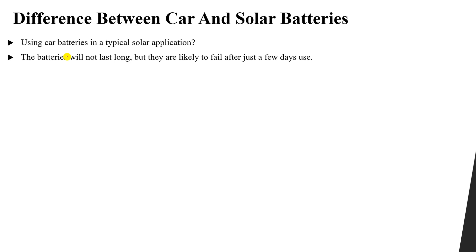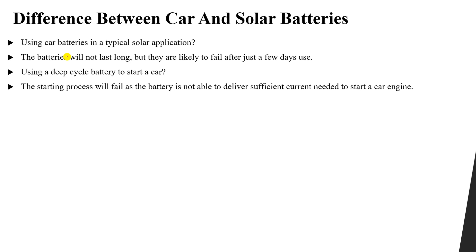Can we use a deep cycle battery to start a car? The answer is also no. The starting process requires a large amount of energy in a very short time to start the car. Solar batteries provide sufficient power for a long duration — a small amount of power over a long time — whereas car batteries provide large energy in a short duration. So neither can substitute for the other.